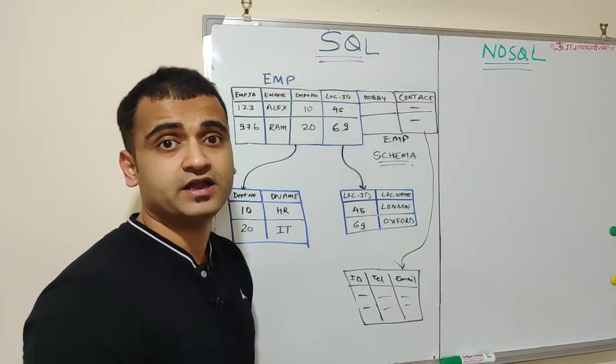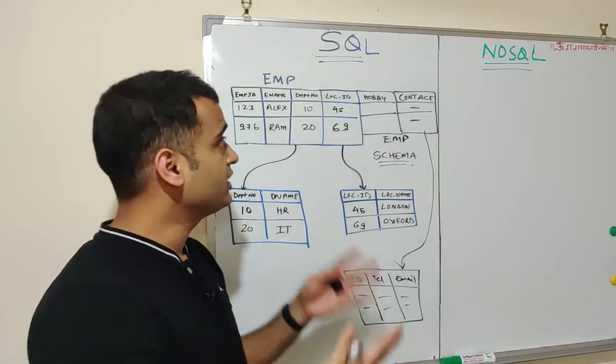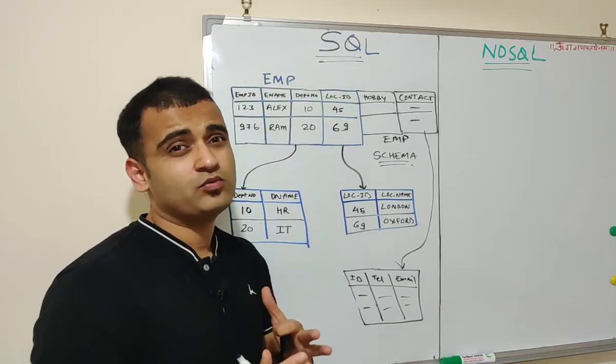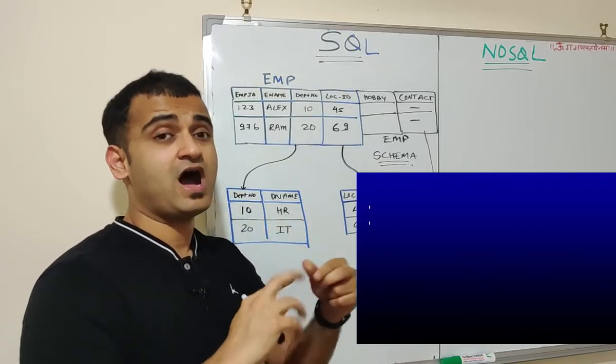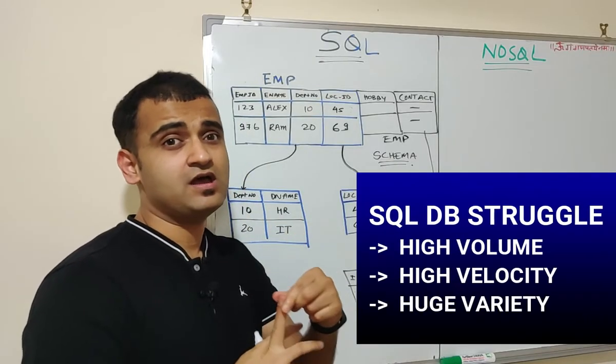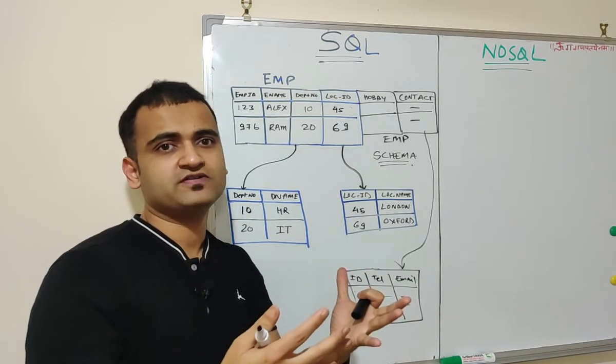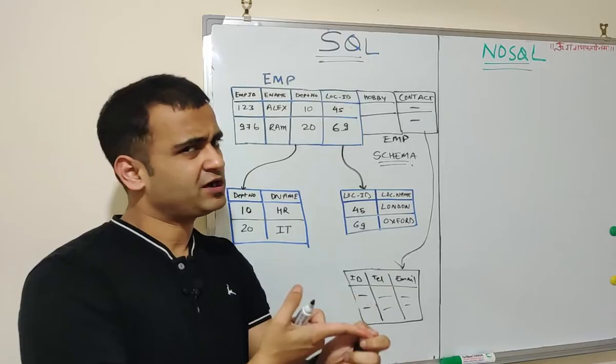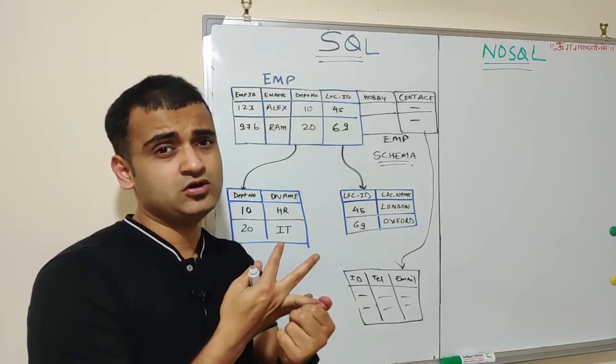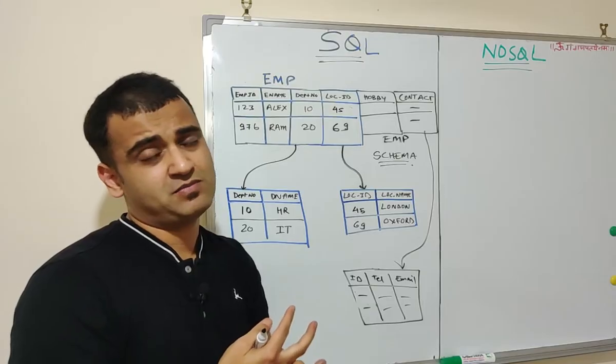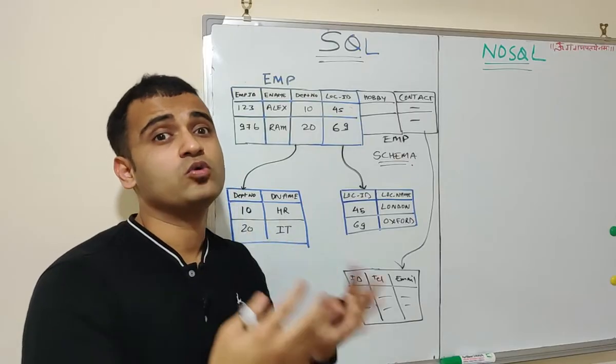So just understand the kind of changes it requires for one particular change in the table format and how it gets populated into all the different tables. And that is where a traditional SQL database is not very flexible when it comes to high volume of data, high velocity of data and then different variety of data. So whenever there is this kind of data where you don't really know what kind of data to expect, you don't really know the pace at which the data would come and you don't really know the kind of data which might come into your database, then it is a perfect recipe to look for a NoSQL database.